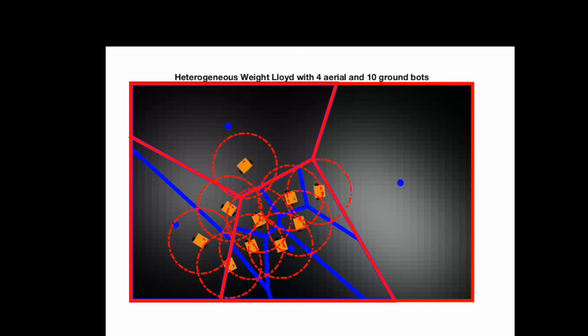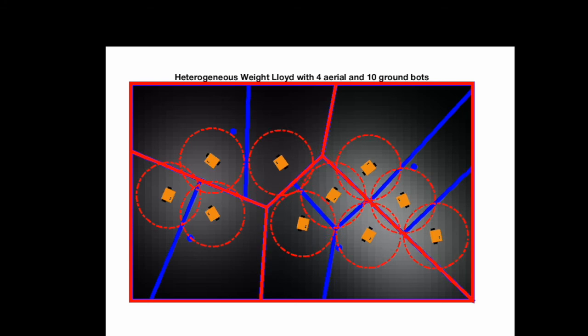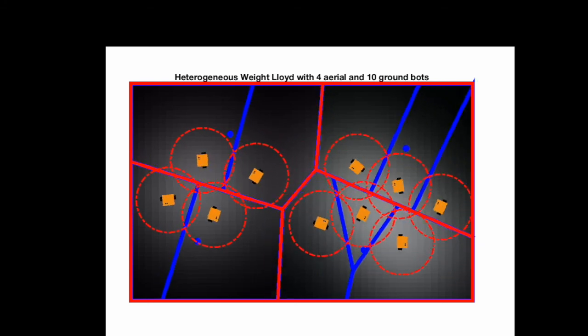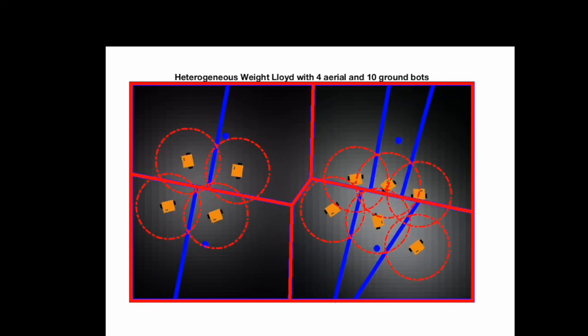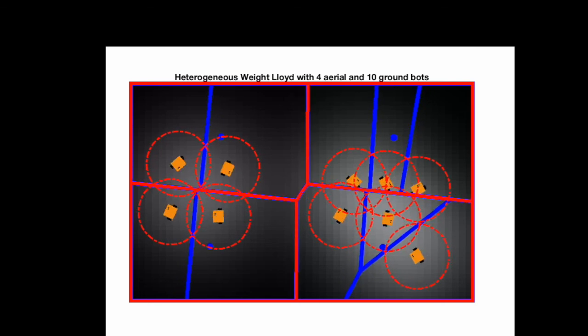Here, we can see the proposed controller in action, with four aerial robots and ten ground robots. Notice that the algorithm has distributed six robots to the larger region of interest, and just four to the smaller region of interest.